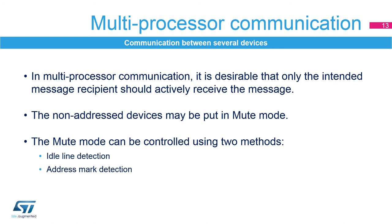To simplify communication between multiple processors, the LPUART supports a special multiprocessor mode. In multiprocessor communication, it is desirable that only the intended message recipient should actively receive the message. The non-addressed devices may be put in mute mode using two methods: idle line or address mark.